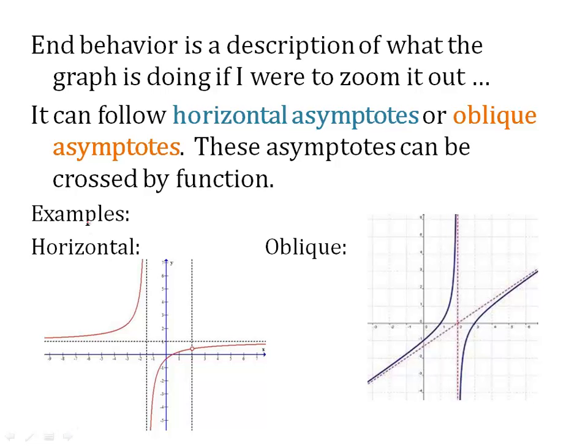It can follow either horizontal asymptotes or oblique asymptotes. Oblique asymptotes are also known as slant asymptotes. Those terms are interchangeable and you'll see both. But today we're looking at horizontal or oblique asymptotes. These asymptotes can be crossed by a function.